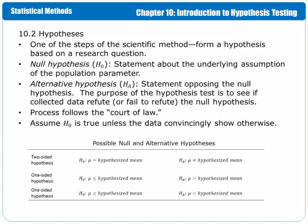The purpose of the hypothesis test is to see if the collected data refute or fail to refute the null hypothesis. The process of testing a hypothesis follows the process that takes place in a court of law. We first assume that the null hypothesis is true unless it can be proven otherwise. Data are then collected as evidence and the test determines if there is enough evidence that shows that the null hypothesis is false beyond reasonable doubt. So you can think of the researcher as the prosecutor in a court, trying to show that the evidence rejects the null hypothesis.